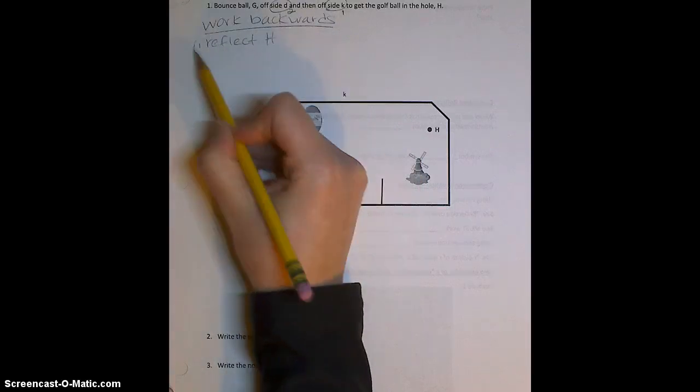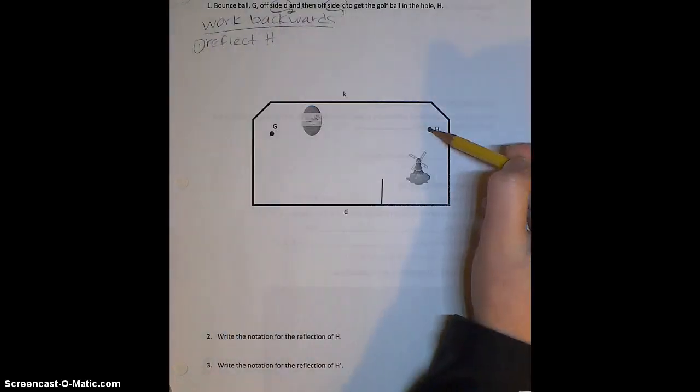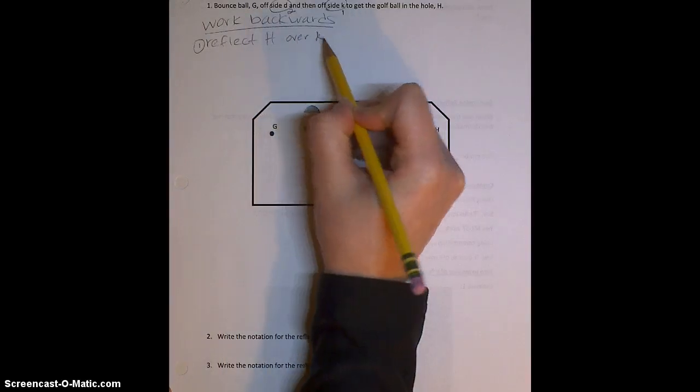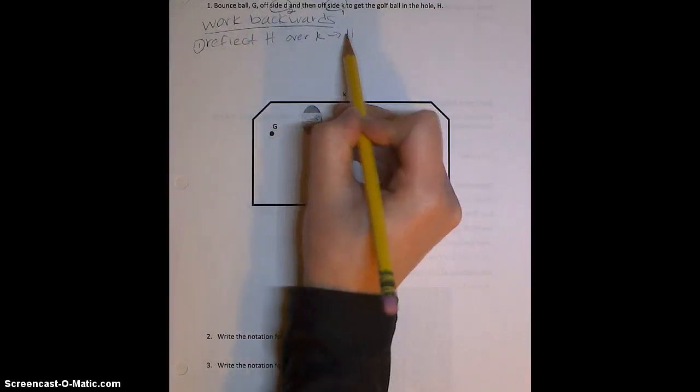I always start with the ending point H, so I'm going to reflect H over K. That's going to give me H prime.